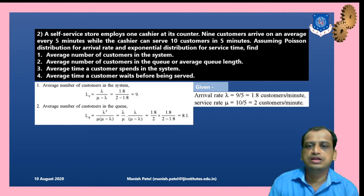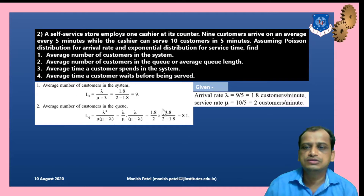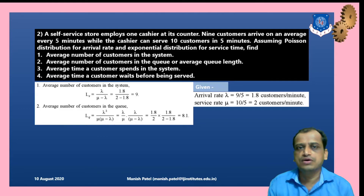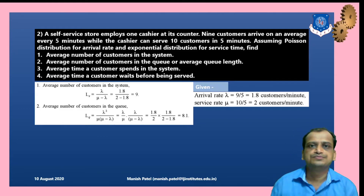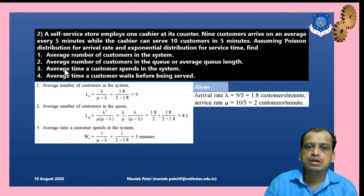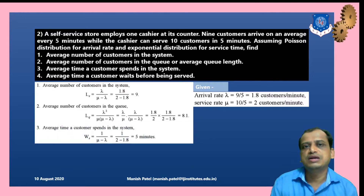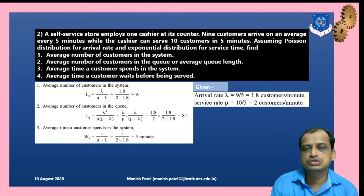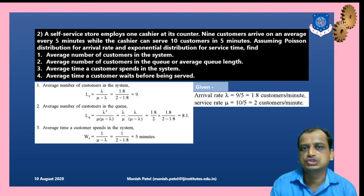For average queue length: Lq = λ²/[μ(μ − λ)]. Putting in the values — 1.8² / (2 × (2 − 1.8)) — gives Lq = 8 customers. So 8 are waiting in the queue and 1 is being served, making 9 in the system total. For average time a customer spends in the system: Ws = 1/(μ − λ) = 1/(2 − 1.8) = 5 minutes.